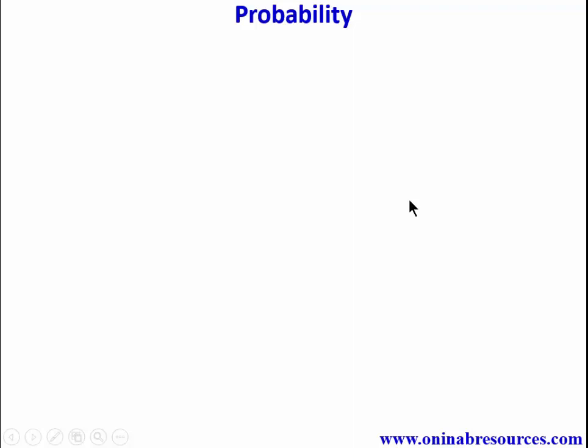Hello out there, welcome again to this tutorial on probability. In this video, we'll be looking at tree diagrams. A tree diagram is a diagram that shows all the possible outcomes of any probability problem. It could be dependent or independent events.